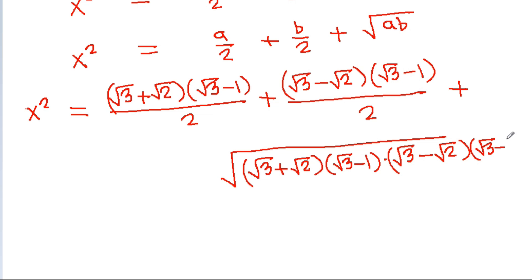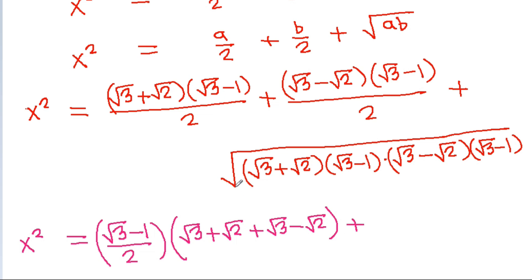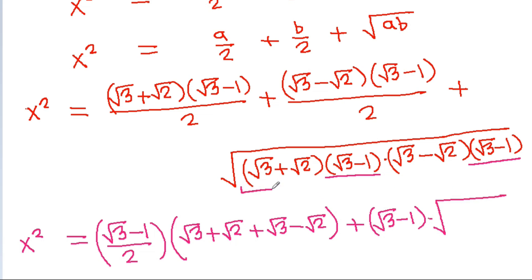Times a square root of 3 minus 1. And now x squared is equal to — from here we can take a square root of 3 minus 1 by 2 common, and it will be a square root of 3 plus a square root of 2 plus a square root of 3 minus a square root of 2, plus a square root of a square root of 3 minus 1 times a square root of 3 minus 1 will be a square root of 3 minus 1, times a square root of 3 plus a square root of 2 times a square root of 3 minus a square root of 2, it will be 3 minus 2.